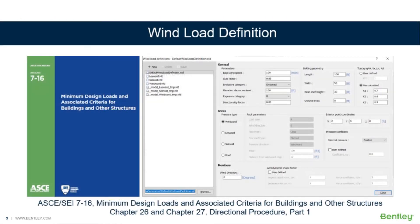RAM Elements uses ASCE 7-16, Chapters 26 and 27, to calculate the design wind pressures for building structures. Since all wind calculations closely follow the code requirements, it is recommended that you are familiar with the ASCE 7 and have access to the code while creating your wind definitions, to ensure that all parameters are set appropriately and that all pressure types and wind directions are accounted for.